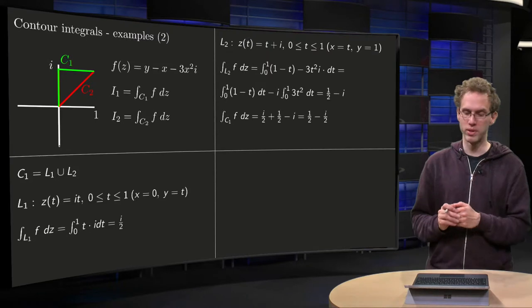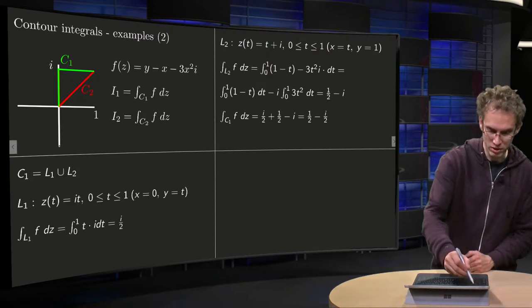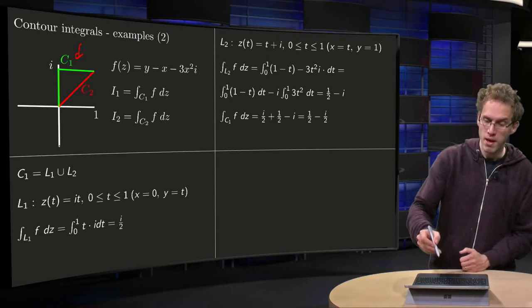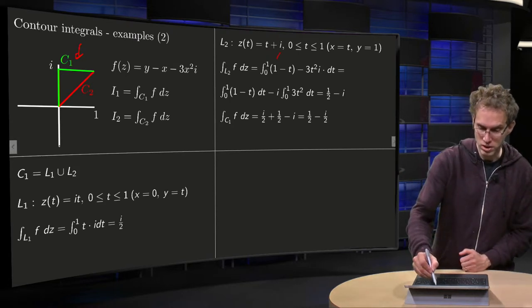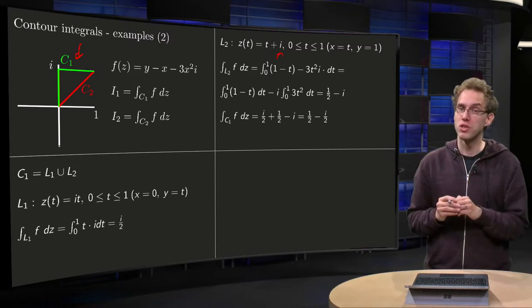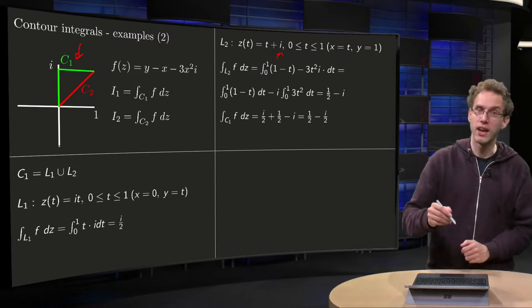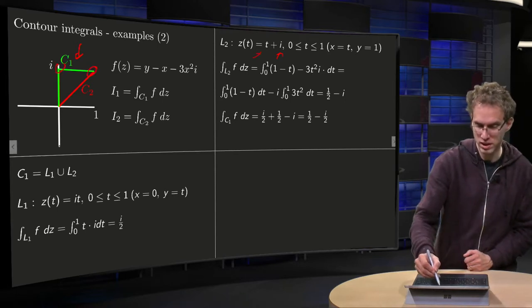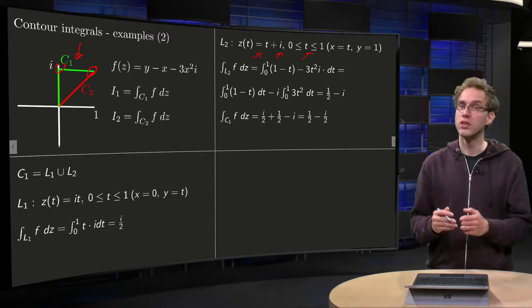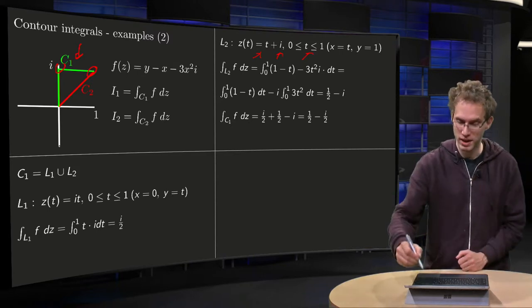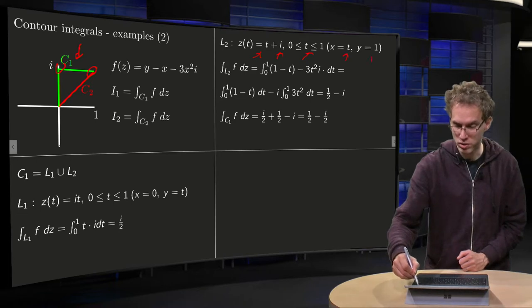Let's continue with L2. Well, on L2 we have the upper line over there, so what do we do? The imaginary part is constant equal to 1, and x varies between 0 and 1, so for x we take t, t between 0 and 1. So parametrization will become t plus i, so x equals t, y equals 1.